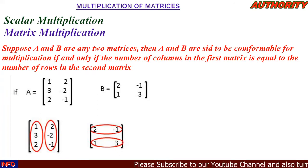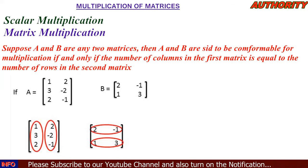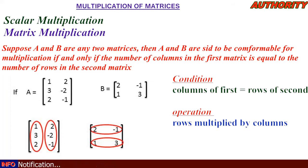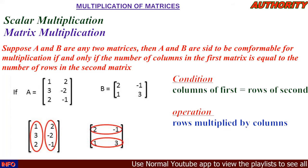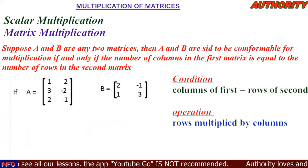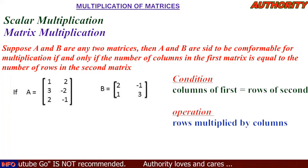We have matrix A and matrix B, and we want to find A multiplied by B. Note that in matrix multiplication, A×B is not equal to B×A. We have checked the conformability condition and it is satisfied, so we can proceed with the multiplication.